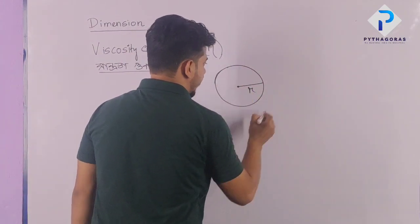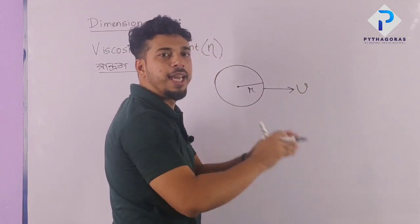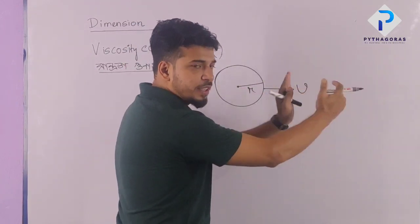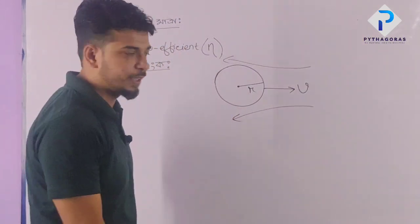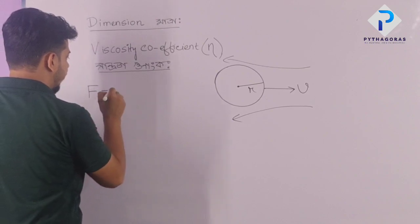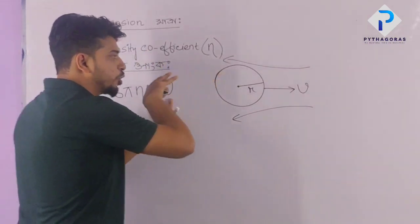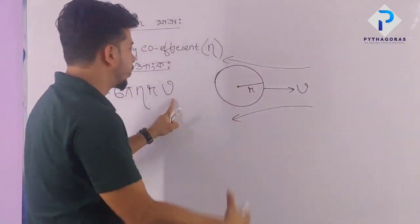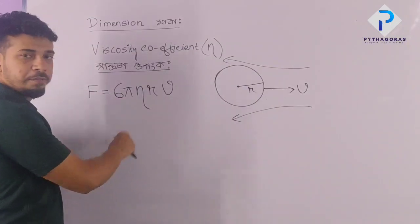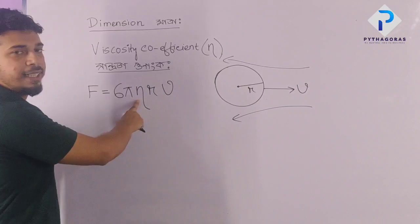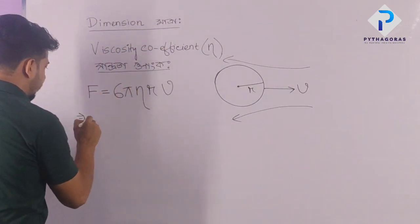For a sphere of radius R moving with velocity V through a medium, the viscous force is given by Stokes' law: F equals 6 pi eta r into v. Here 6 and pi are dimensionless constants, eta is the coefficient of viscosity, r is the radius, and v is the velocity.